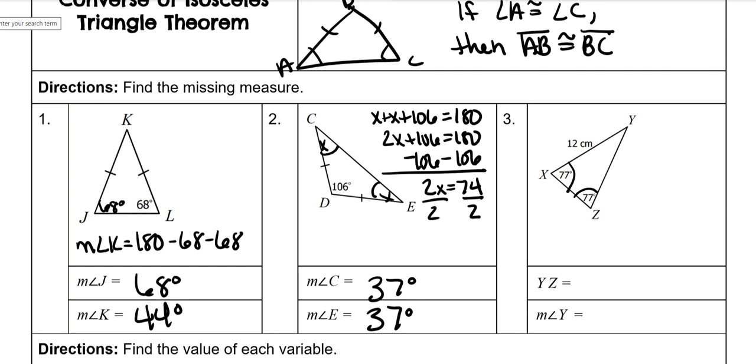Because these are my congruent angles, these are my congruent sides. So this should also be 12 centimeters. And then to find the measure of angle Y, you subtract them from 180, which is 26 degrees.